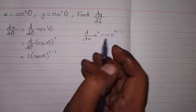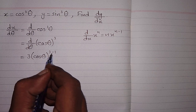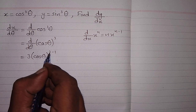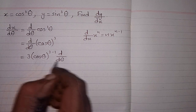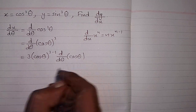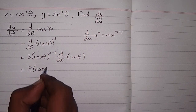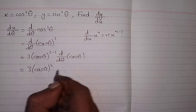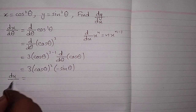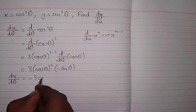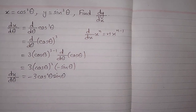The power 3 becomes the coefficient and we subtract 1 from the power, that is 3 minus 1, then multiply by the derivative of the inside of the bracket which is cos theta. So we have 3 cos theta to the power 2, and the derivative of cos theta is minus sin theta. Therefore dx by d theta is equal to minus 3 cos square theta sin theta.